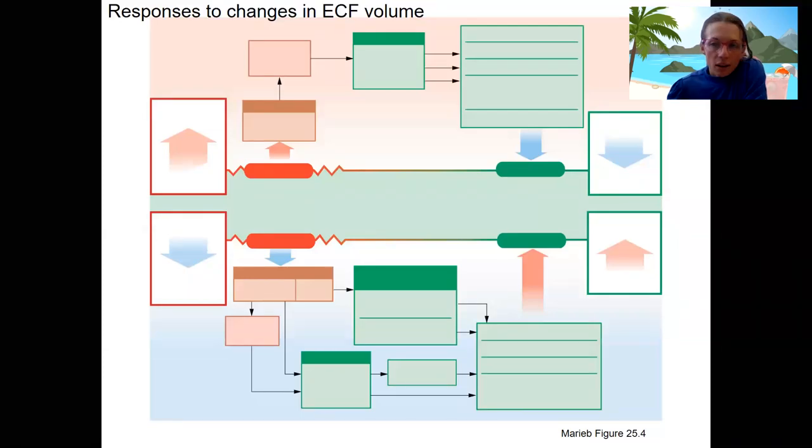We're going to diagram this out one last time and end with our learning outcomes. So this diagram here, as you can see by the title, is about changes in volume. So our homeostatic variable thing that we're regulating is ECF volume.